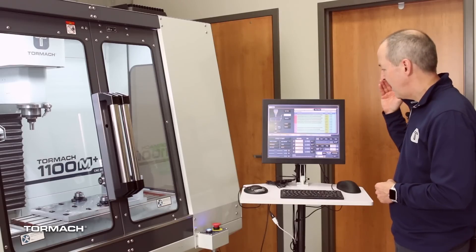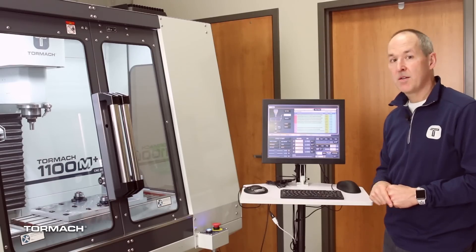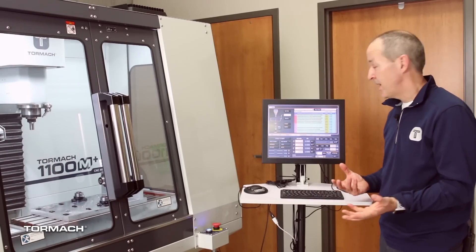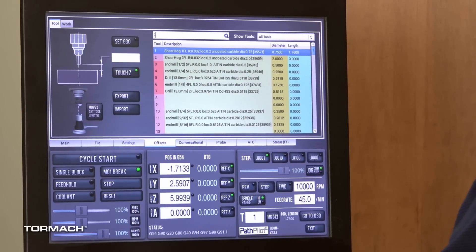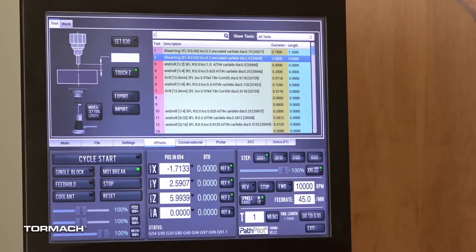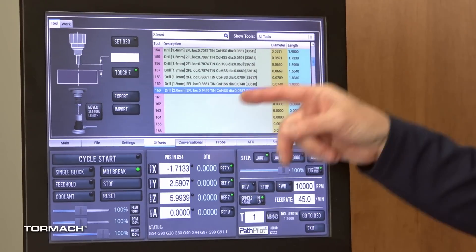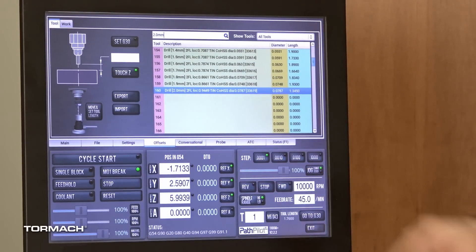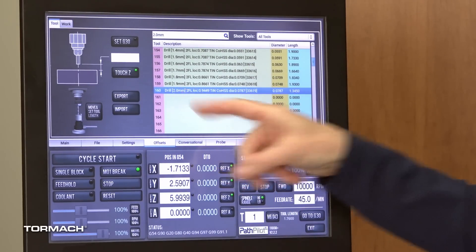So a good example is, I know I've got a two millimeter drill in here somewhere. I don't know which tool number it is, I forget. I can just type 2.0mm and boom, it's taking me to tool 160 because it's found the two millimeter right in there.